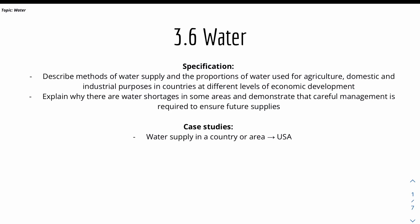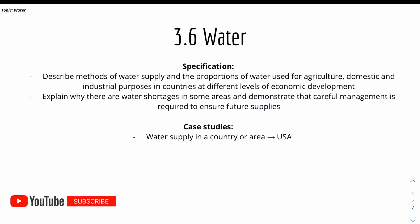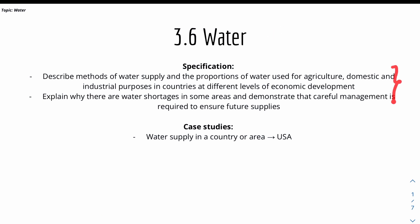Hey friends, my name is Ziyi and welcome back to a new video for IGCSE Geography. Today we have a new video for Theme 3, which is 3.6 for water. Here are the specifications from the website, and in this video we have one case study which is a water supply in a country or an area.